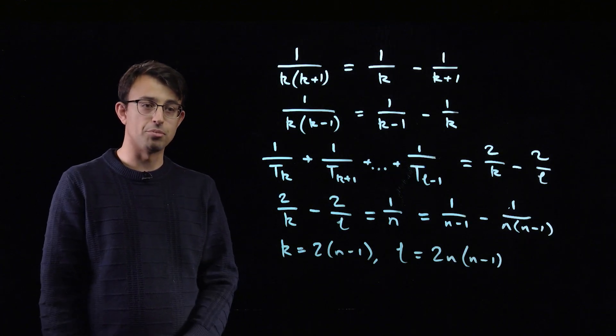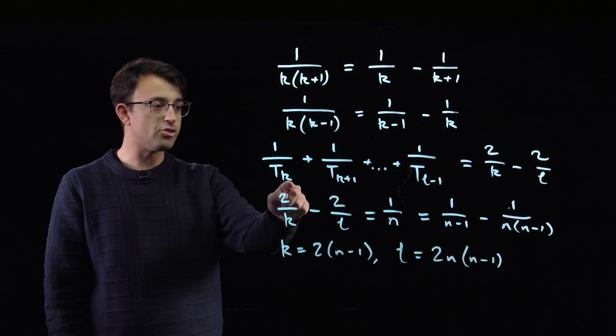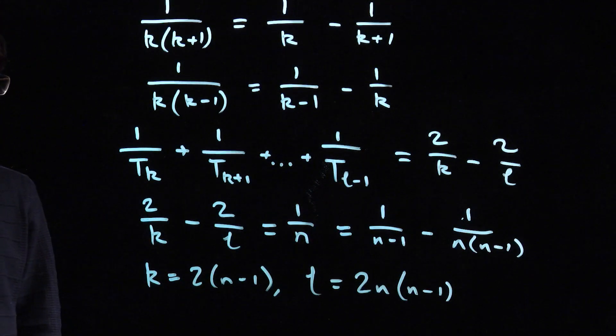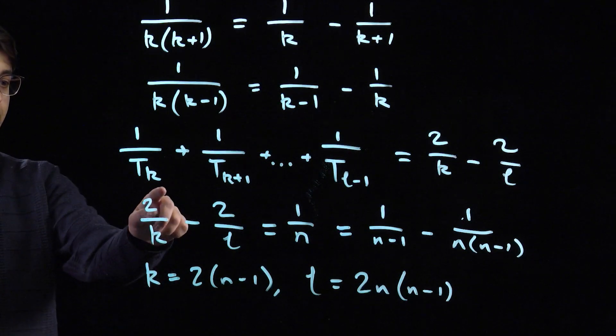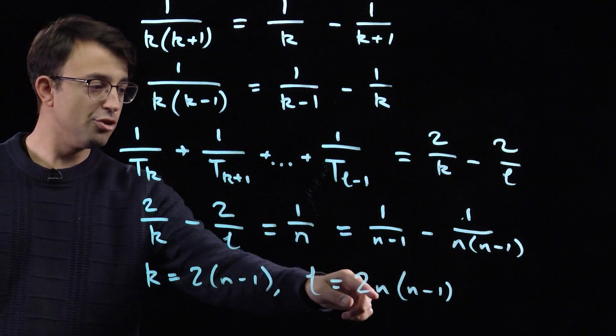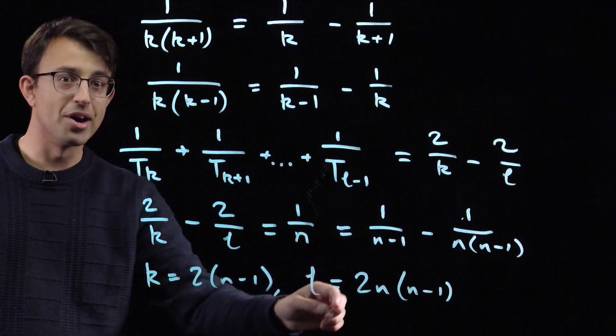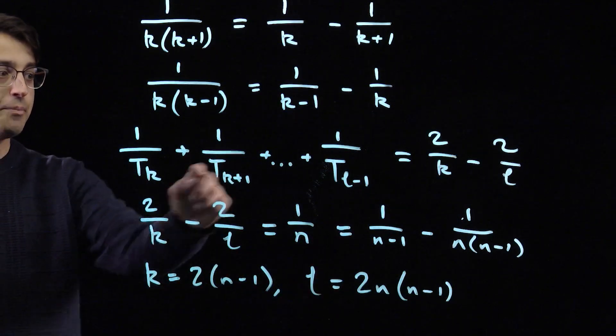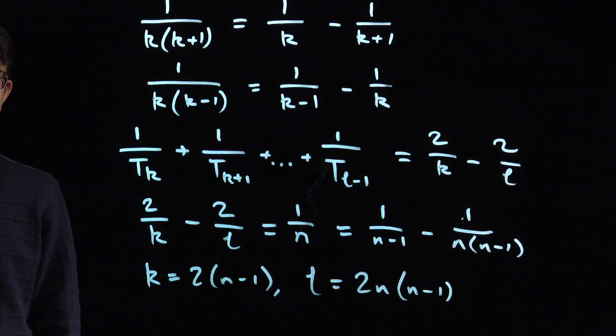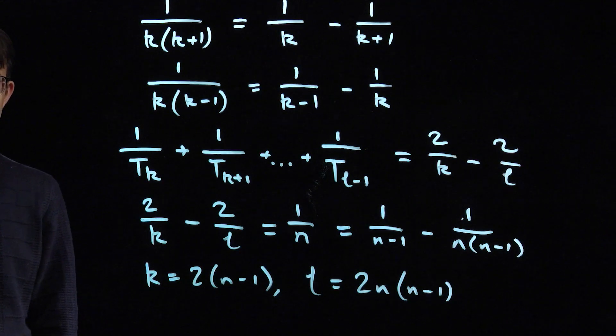So this tells us how to write 1 over n as a finite sum of reciprocals of triangle numbers. We just take a consecutive sequence of these reciprocals of triangle numbers going from 1 over the 2 n minus 1 triangle number up to the 2 n times n minus 1 minus 1 triangle number. And that will achieve exactly what we want with the sum of the reciprocals being 1 over n. And that finishes the problem.